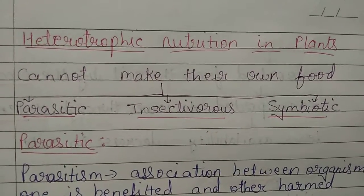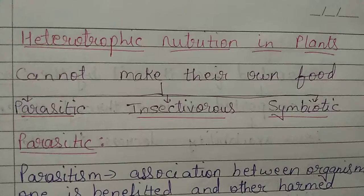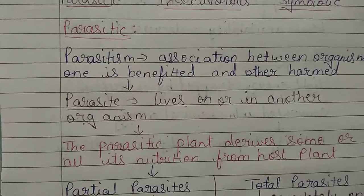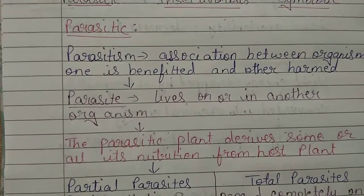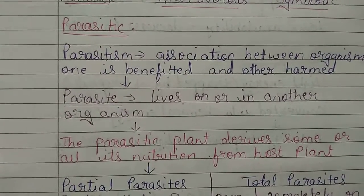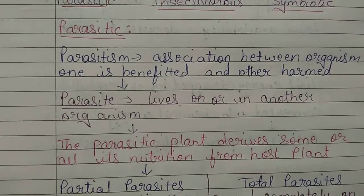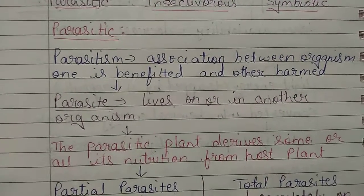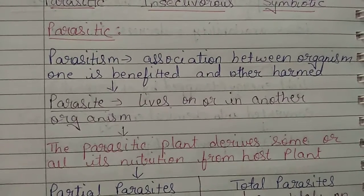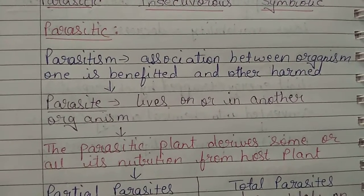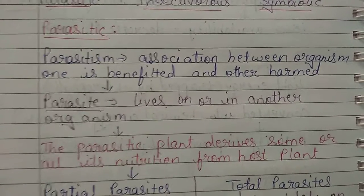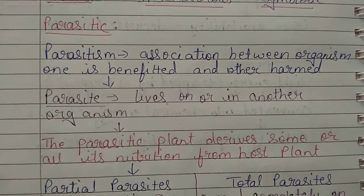They show heterotrophic nutrition in three ways: parasitic, insectivorous, and symbiotic. So let us see what is parasitic. Parasitism is an association between two organisms where one is benefited and the other is harmed. This phenomenon is known as parasitism.